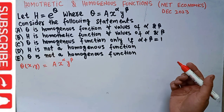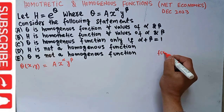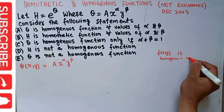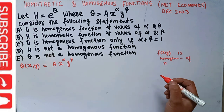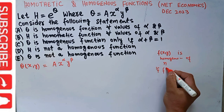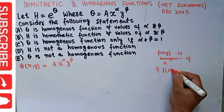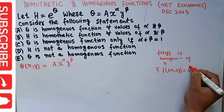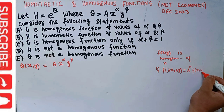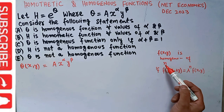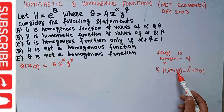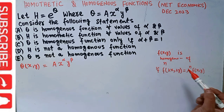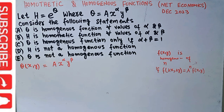By homogeneous function, what we mean: we say a function f(x, y) is homogeneous of degree n if, when we increase each variable by factor λ — replacing x with λx and y with λy — we get a function equal to λ^n * f(x, y). That is, this function is homogeneous of degree n.